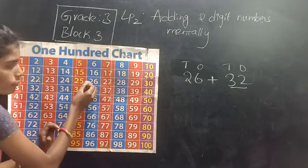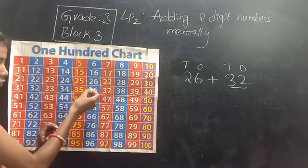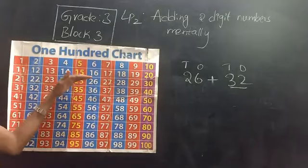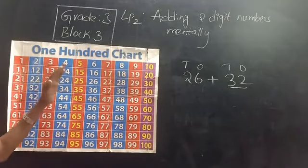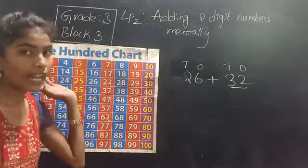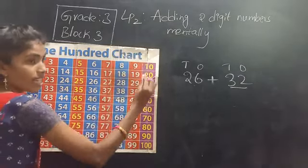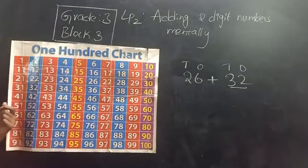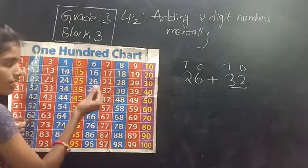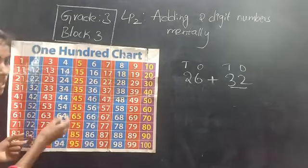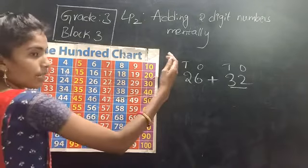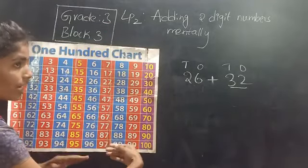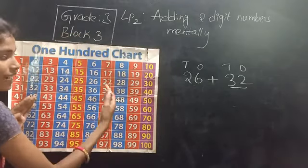When you go down from 26 to 36, that means 10 is increasing. From 36 to 46, 10 is increasing. From 46 to 56, 10 is increasing. So every time you go down on the 100 chart, that means plus 10. If you go up, that means minus 10. And if you go right — from 21 to 22, 23, 24, 25 — plus 1 is increasing. Going backward means minus 1. So the pattern in the 100 chart: go down means plus 10, go up means minus 10.